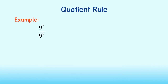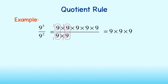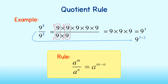The last rule we will cover is the quotient rule. It applies when we are dividing two numbers of the same base in exponential form. Writing this problem out, we get 9 times 9 times 9 times 9 times 9 times 9 times 9 in the numerator and 9 times 9 in the denominator. To simplify, we can group numbers and reduce. 9 over 9 is equal to 1, and this second 9 over 9 is also equal to 1. What we have left is only in the numerator: 9 times 9 times 9, or 9 to the third power. Notice that this is also the result of subtracting the exponents. When dividing two numbers in exponential form, we subtract the exponents.